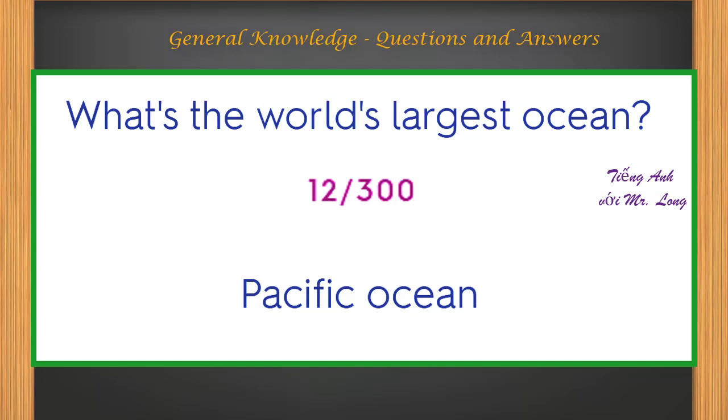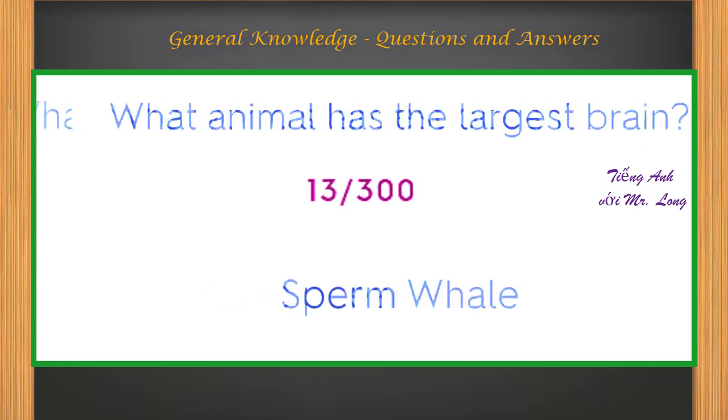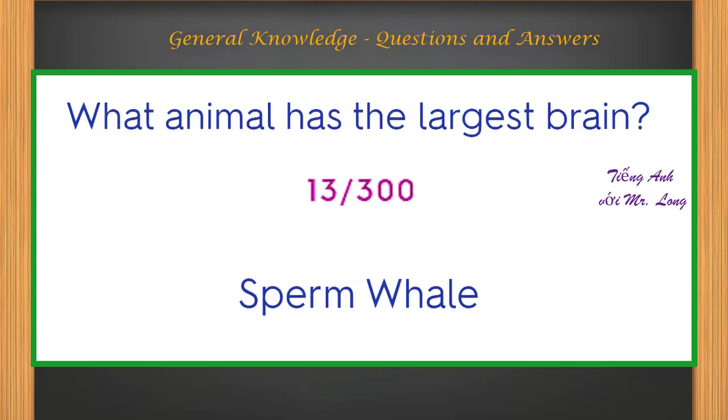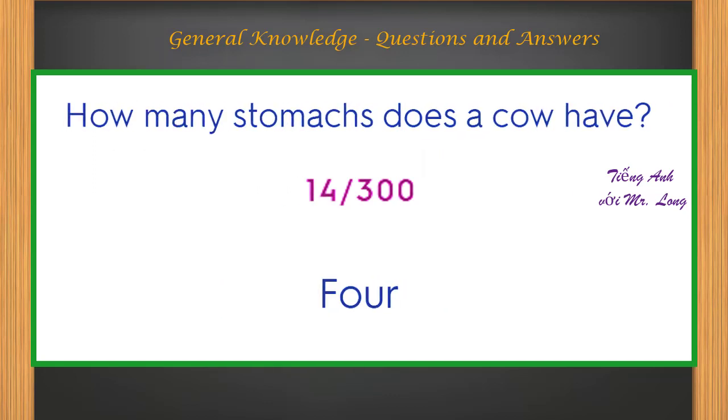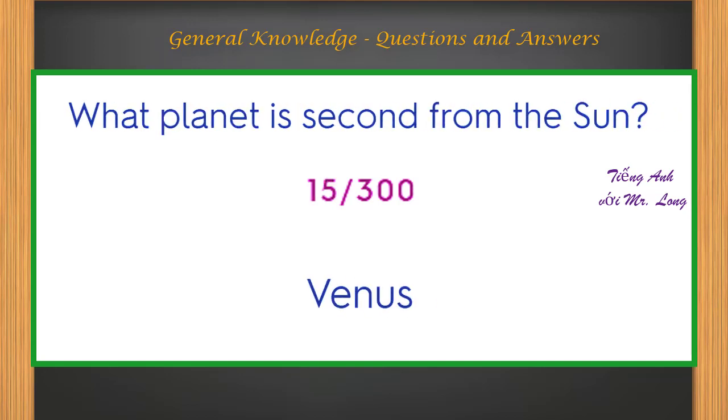What's the world's largest ocean? Pacific Ocean. What animal has the largest brain? Sperm whale. How many stomachs does a cow have? Four.